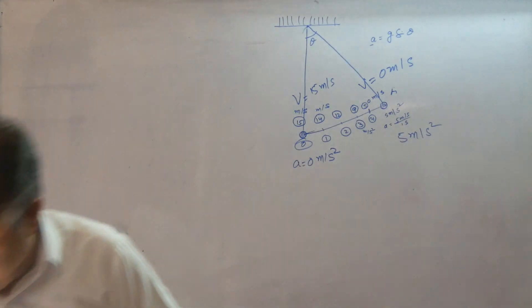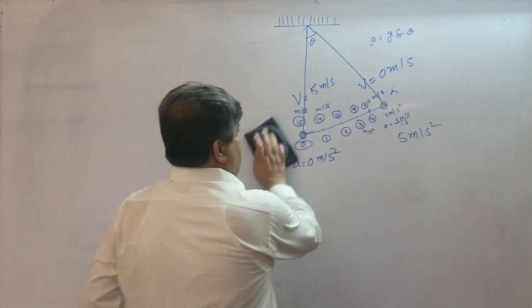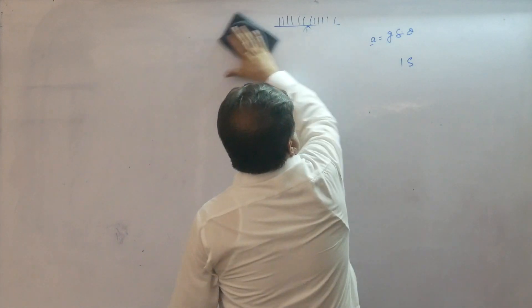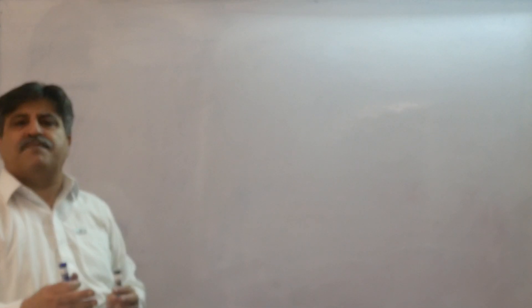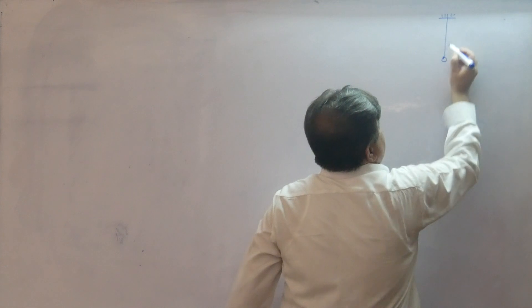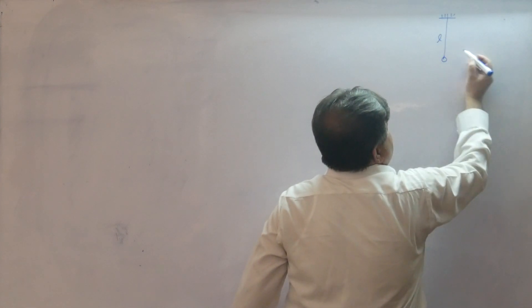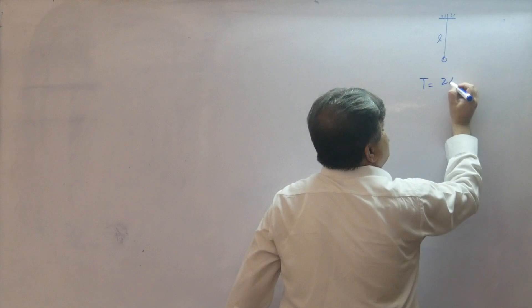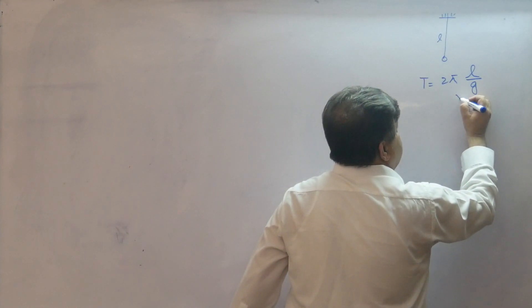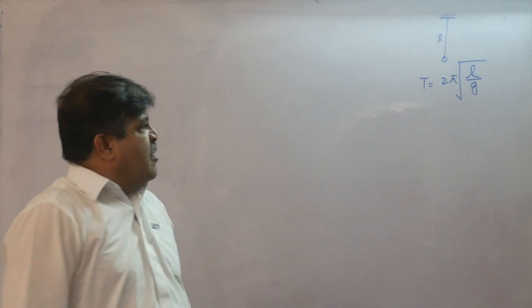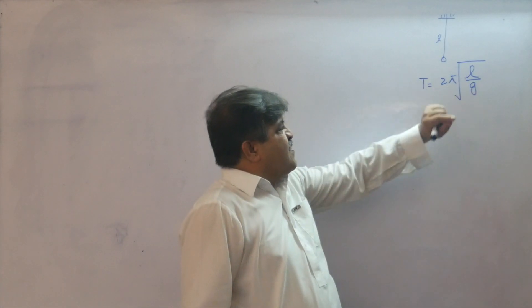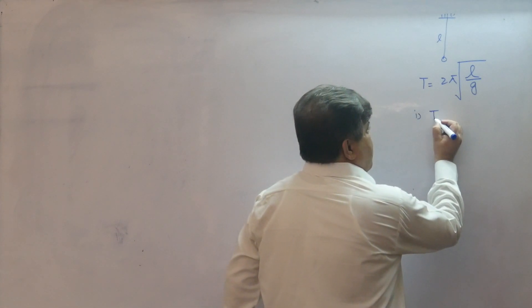This was an important concept to learn, as this type of explanation is not addressed in the book. Now in your exam there can be conceptual questions about this. The time period of a simple pendulum is given by the formula: T equals 2π times the square root of L over g, where L is the length of the pendulum.